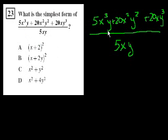So what's 5x to the third y divided by 5xy? Well, 5 divided by 5 is 1, so we don't have to write that. x to the third divided by x is x squared. y divided by y is 1. So this term reduces to x squared. Next one: 20 divided by 5 is 4, x squared divided by x is x, y squared divided by y is y. So we get 4xy.